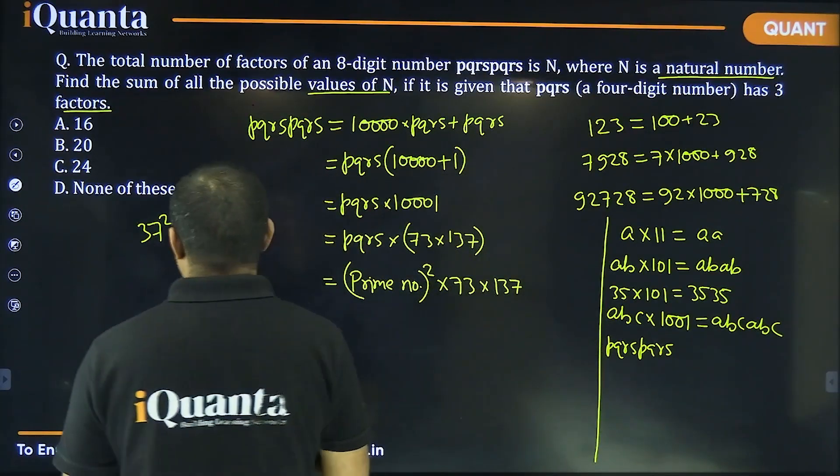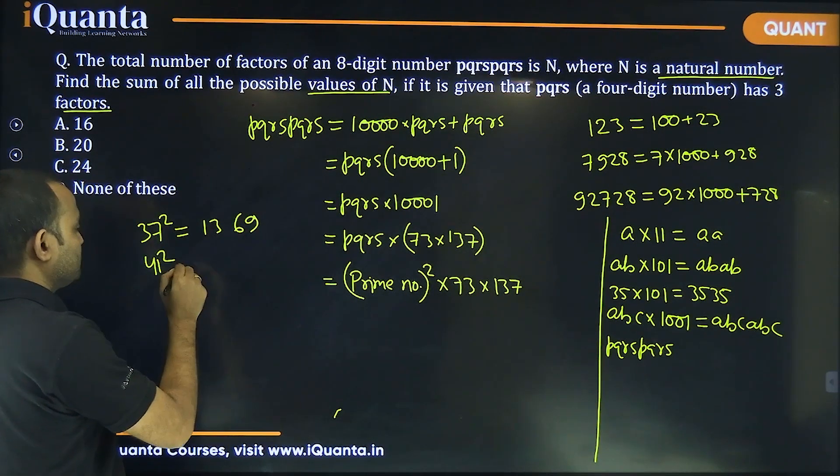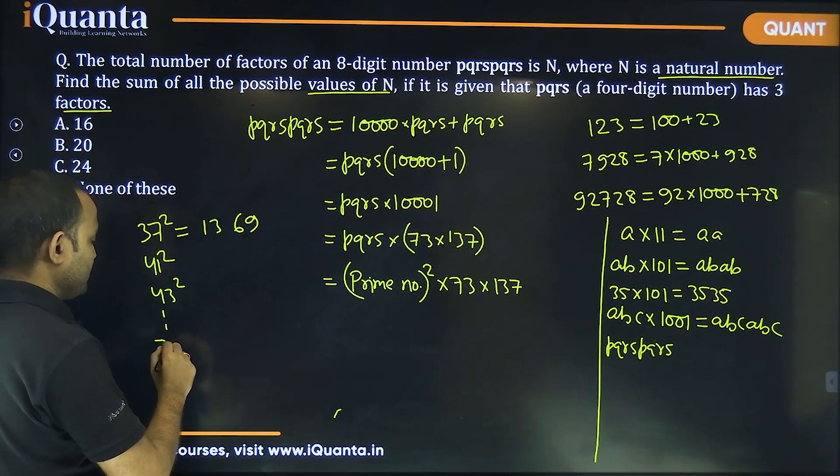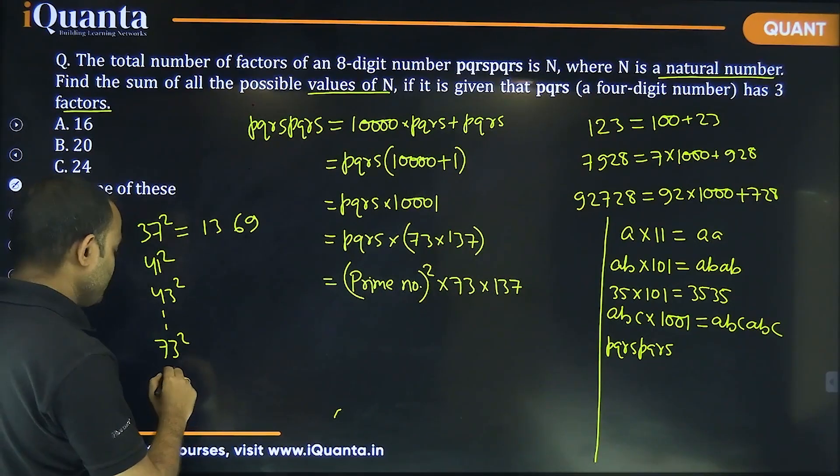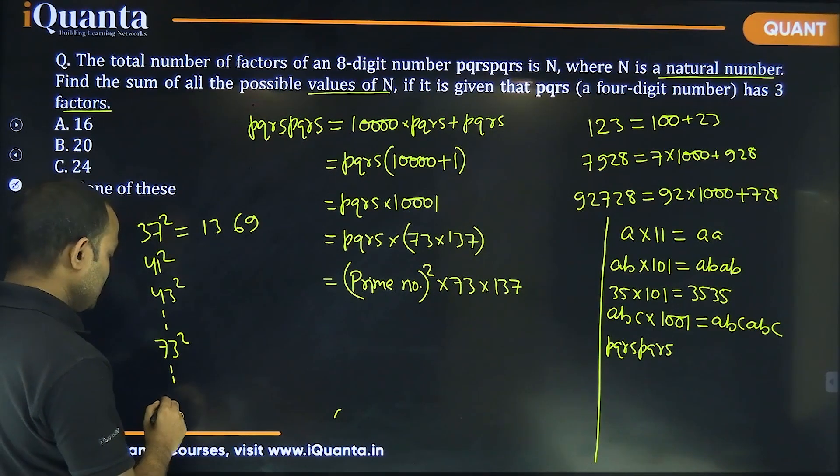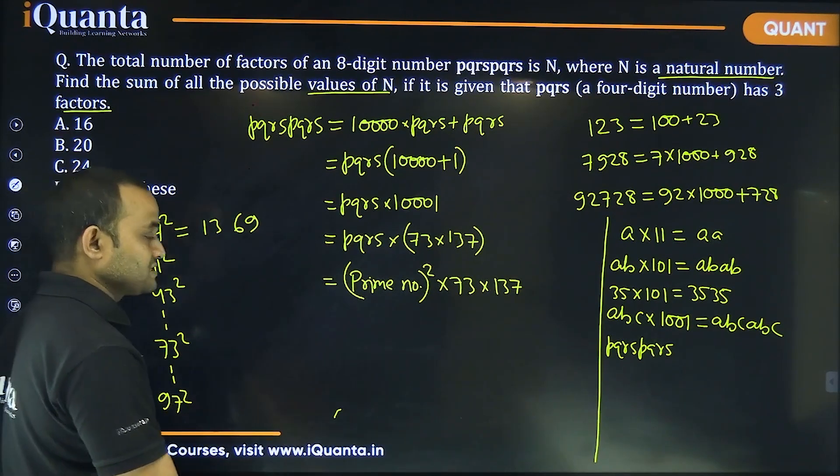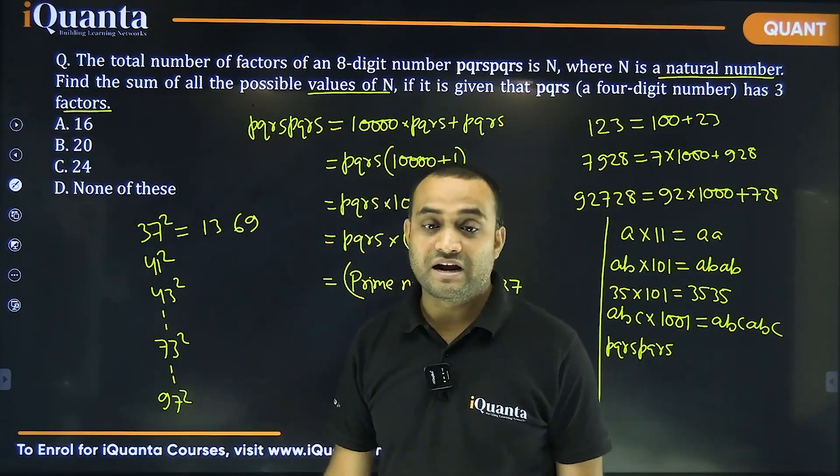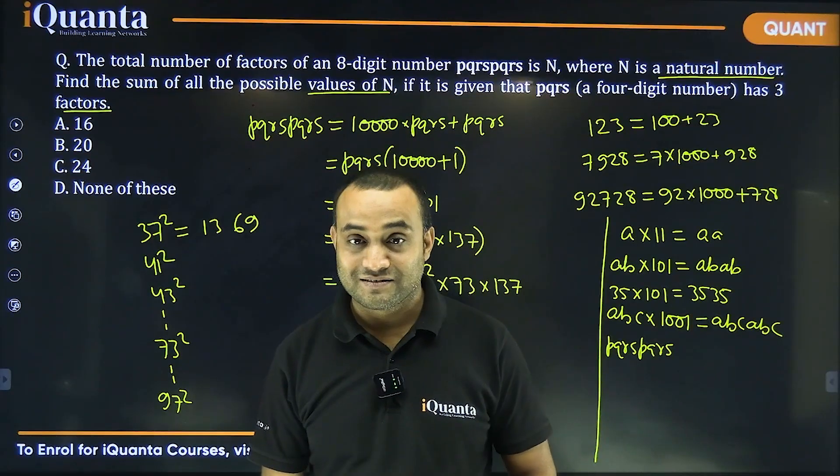Then, we can also take 41 square, then we can take 43 square. Similarly, somewhere in between, 73 square will also be a value of PQRS. And last, it will be 97 square. All of these will be a four digit number and a perfect square, which will have exactly three factors.